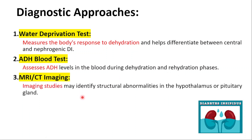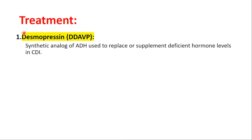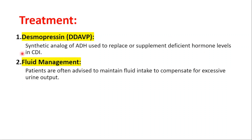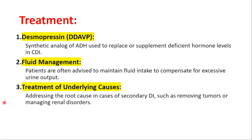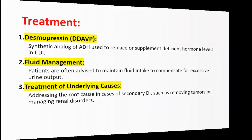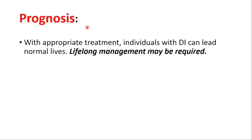For treatment, desmopressin — a synthetic analog of ADH — is used to replace or supplement deficient hormone levels in central diabetes insipidus. Fluid management is also important, as patients are often advised to maintain fluid intake to compensate for excessive urine output. In cases of secondary diabetes insipidus, addressing the root cause, such as removing tumors or managing renal disorders, is also a treatment option.